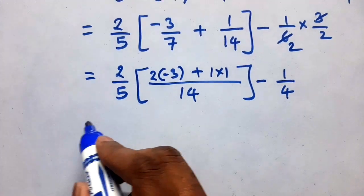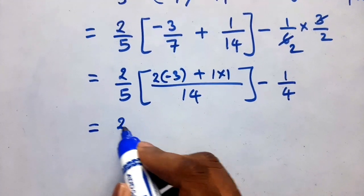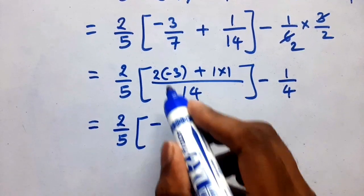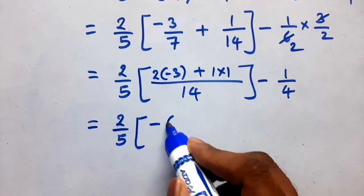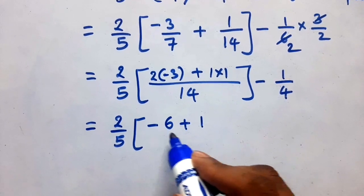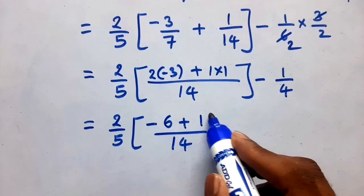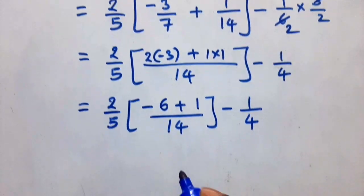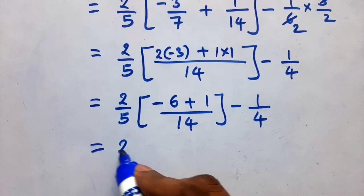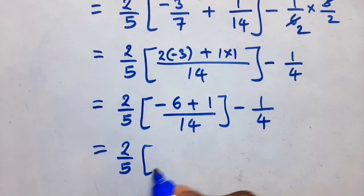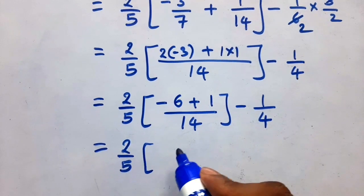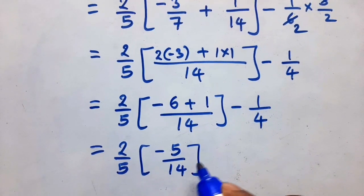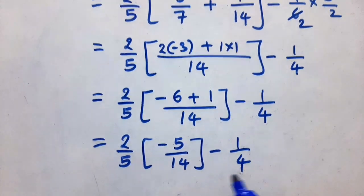That equals 2 by 5 into bracket: plus into minus gives minus 2 into 3 is 6, so minus 6, plus 1 ones are 1. So we have 2 by 5 into minus 6 plus 1 by 14, minus 1 by 4. That equals 2 by 5 into minus 5 by 14, minus 1 by 4.